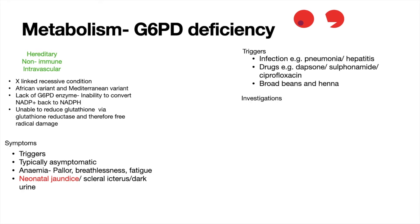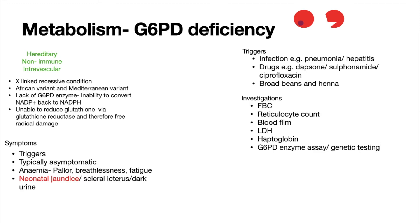In terms of investigations, we look at a full blood count and reticulocyte count, which will point towards a hemolytic disease. On a blood film, there are a couple of interesting findings. On the slide you can see on the left-hand side a red blood cell with a Heinz body. Heinz bodies are seen as abnormal by the body, so macrophages in the spleen take a bite out of the red blood cell where the Heinz body is, producing a bite cell, as shown on the right-hand side.